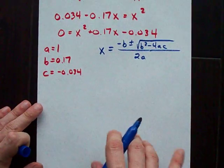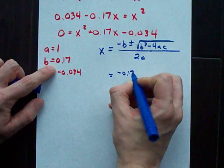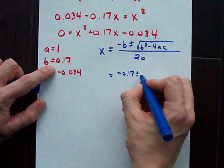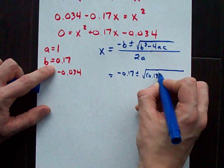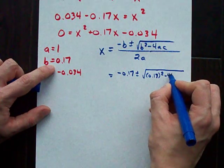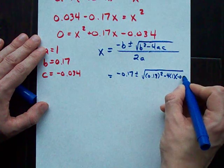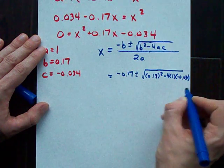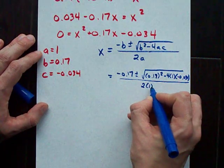X is negative 0.17 plus or minus the square root of 0.17 squared minus 4 times A, which is 1, times C, which is negative 0.034. Almost ran out of room there. 2 times 1 on the bottom.